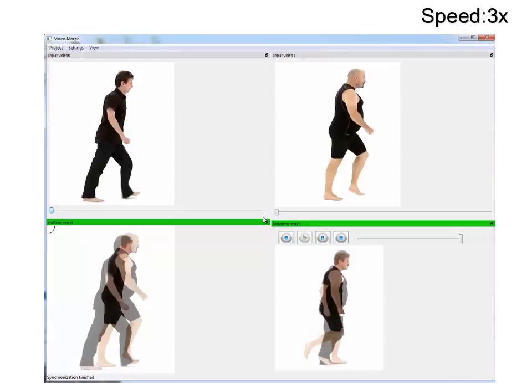Next, we present a demonstration of our user interface. The system has four panes. The two panes at the top show the two input videos. The pane at the bottom left shows the halfway image, and the one at the bottom right, the current result.